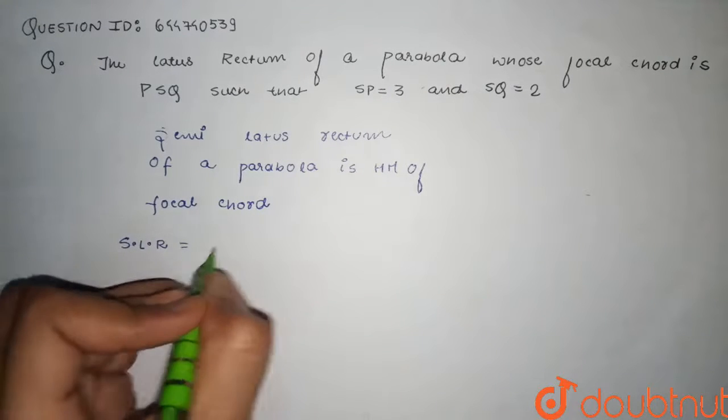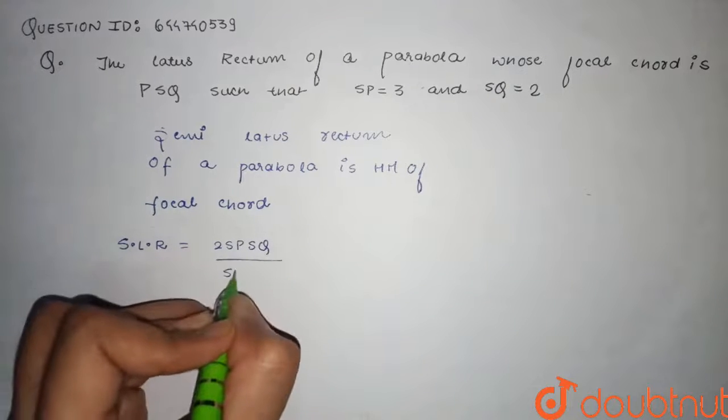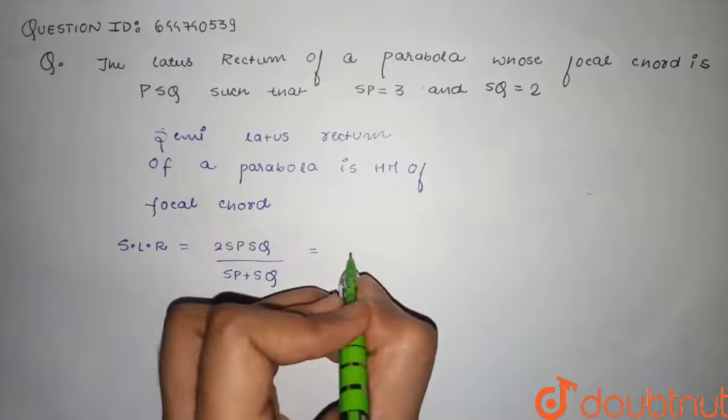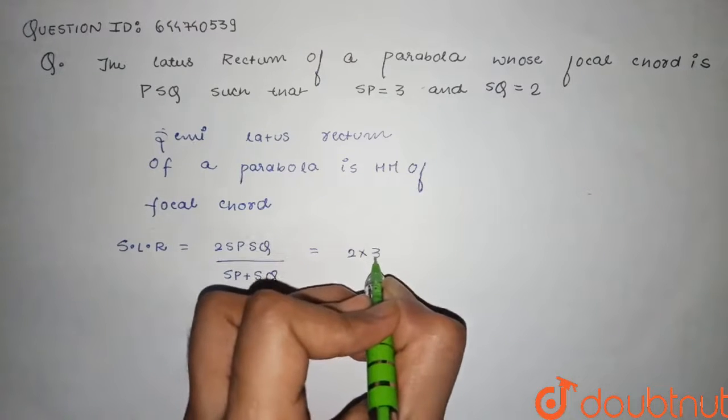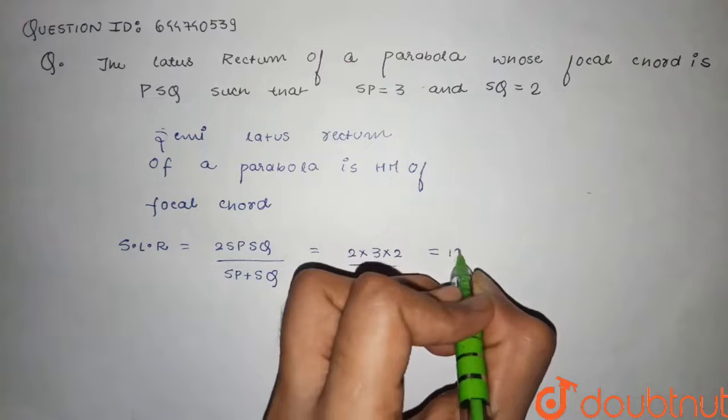be 2 times SP times SQ divided by SP plus SQ. That is the harmonic mean. We can substitute the values: 2 times 3 times 2 divided by 5, which comes out to be 12/5.